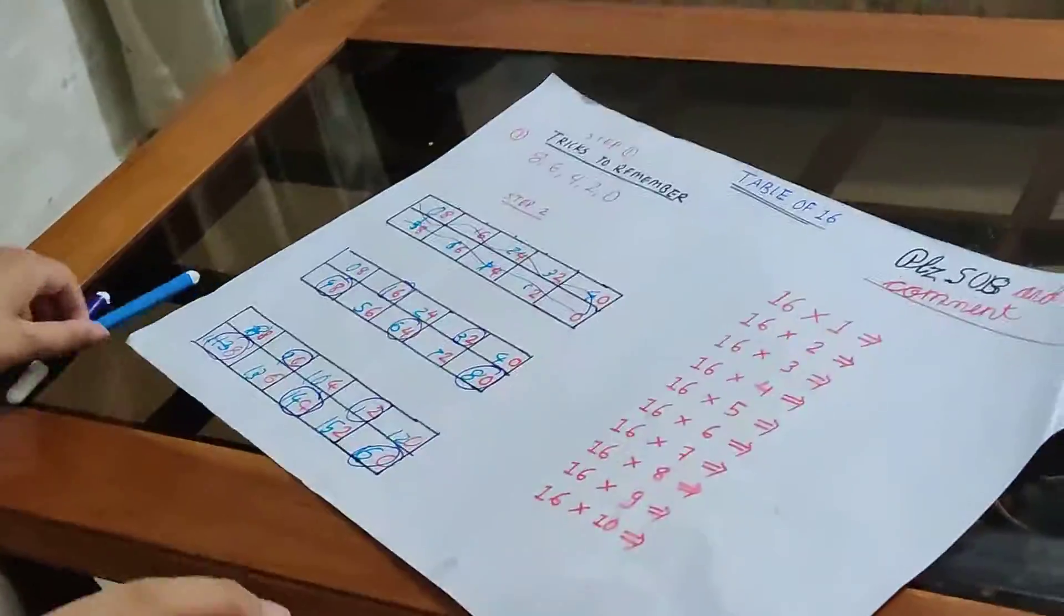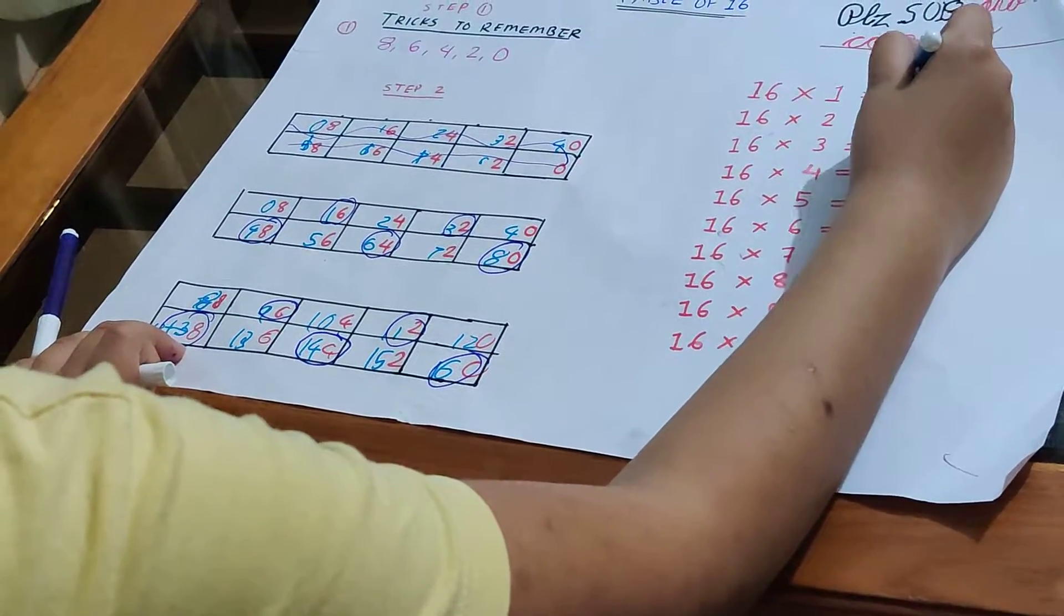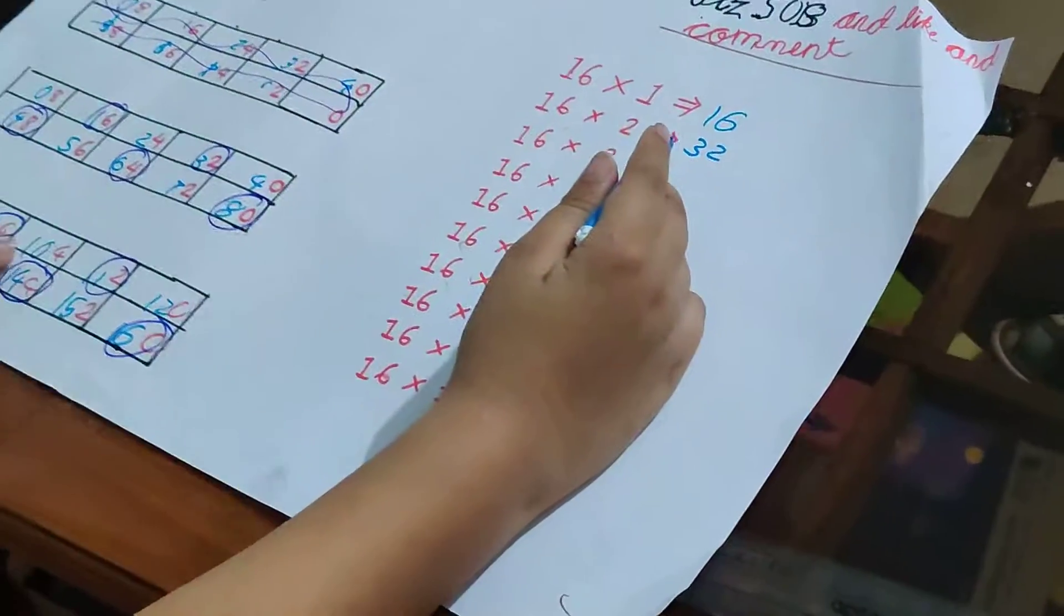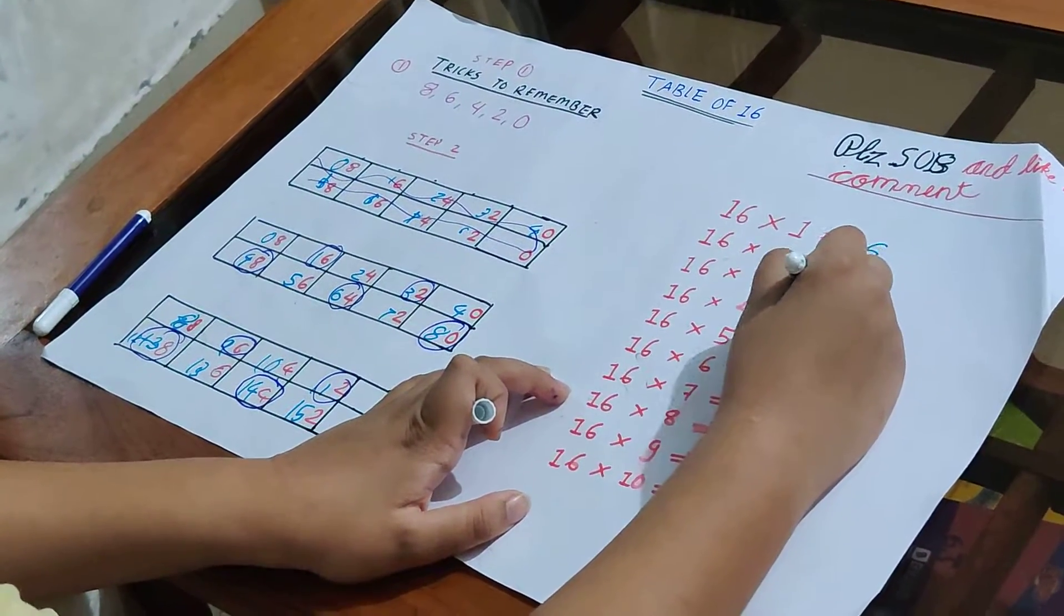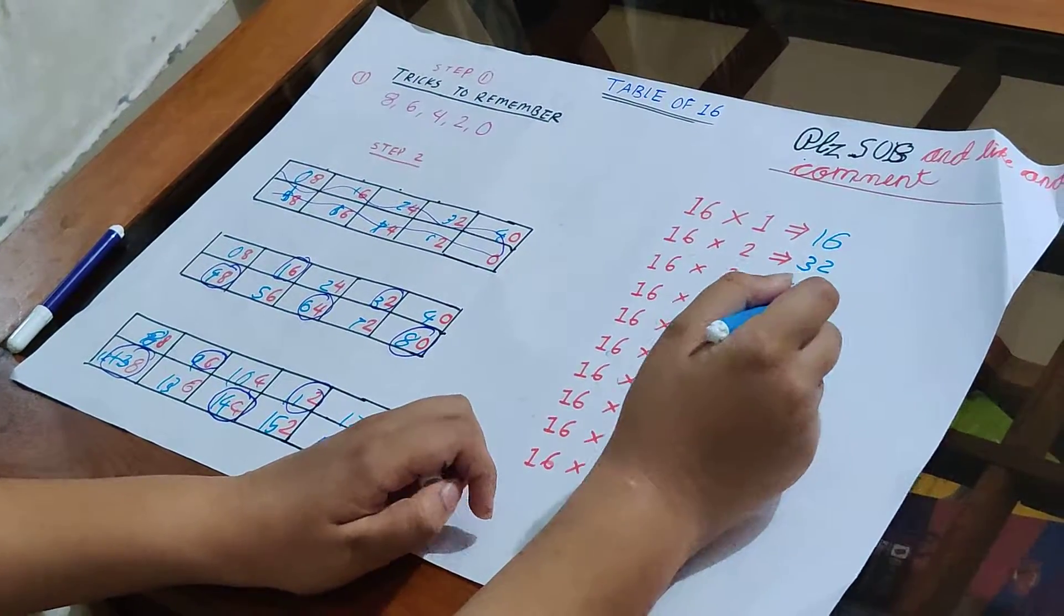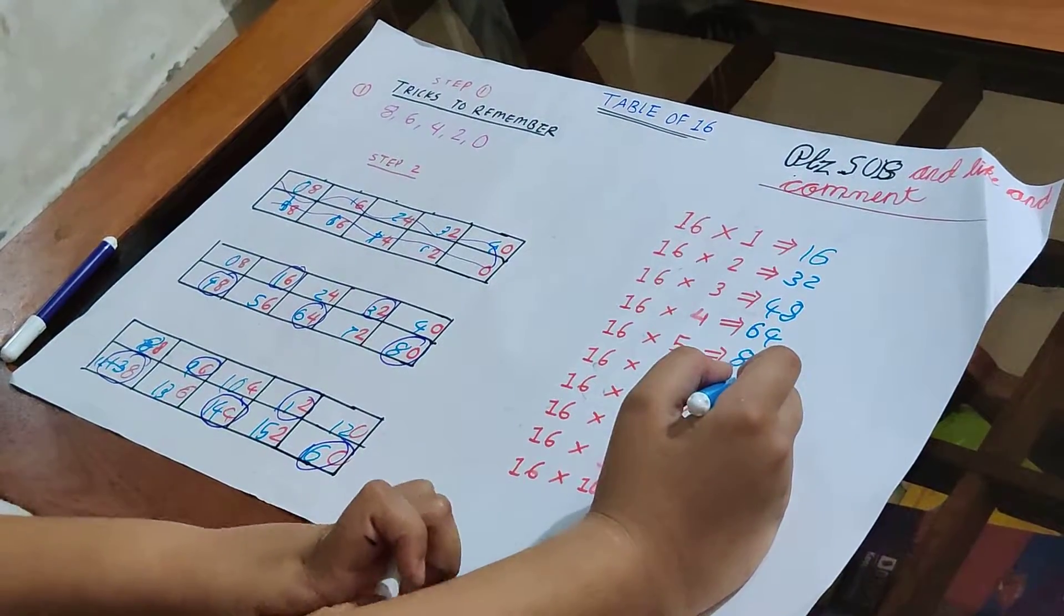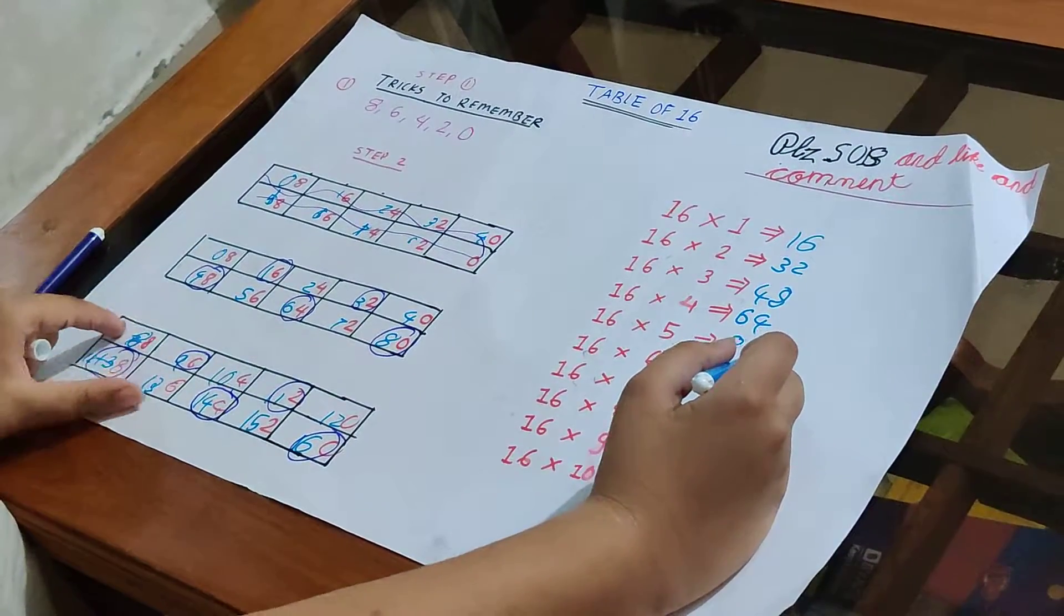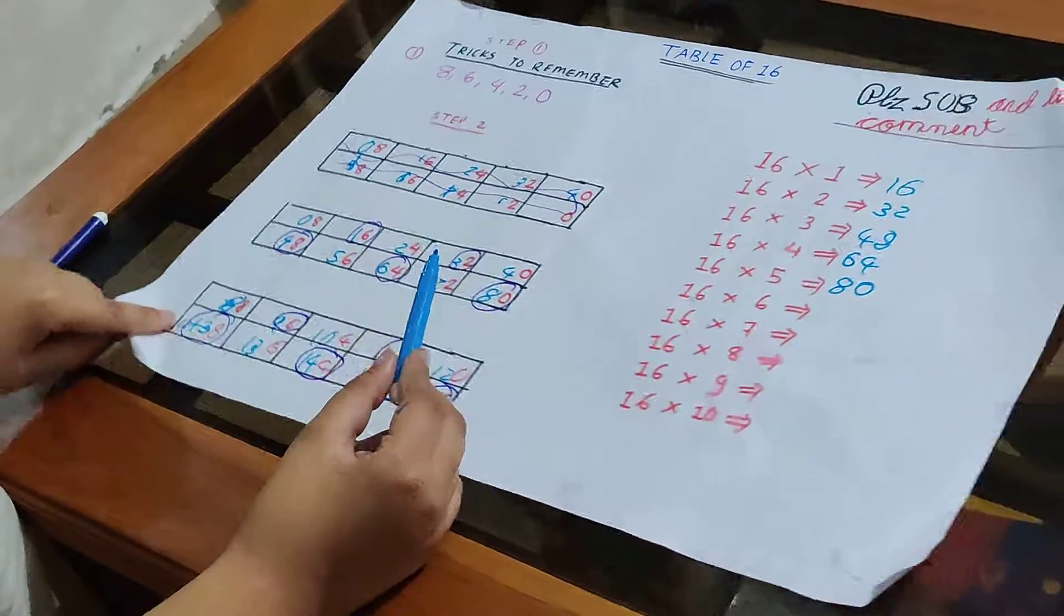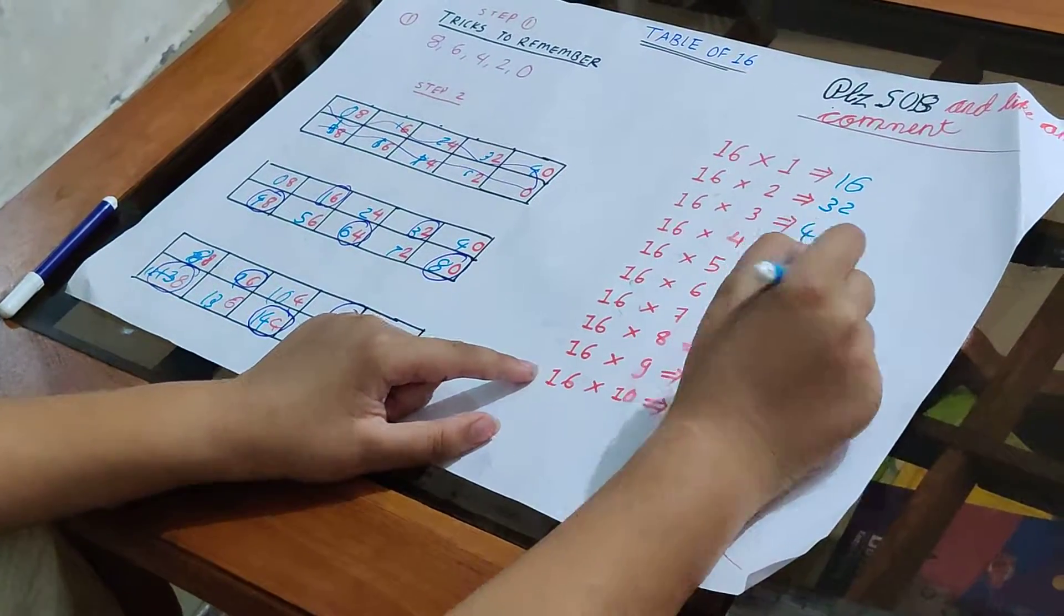So let's write it. So the first that I tell you about, 16, 1 times 16, and then 32. Then repeat, but don't repeat this one, just copy the one that I have circled. 10, 96, 96, 10.